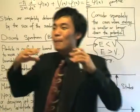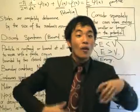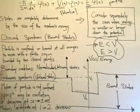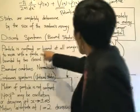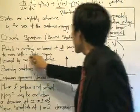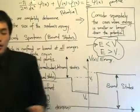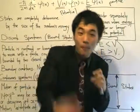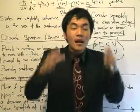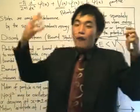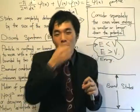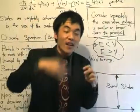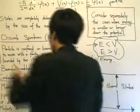A discrete energy spectrum means the particle is only allowed certain values. When the energy of the particle is less than the potential, we will have a discrete energy spectrum. The properties of a bound state: first, the particle is confined or bound at all energies to move within a finite region. As a classical analogy, imagine a comet moving toward Earth's orbit — it gets trapped inside Earth's atmosphere and moves around the Earth. That motion is confined at different energy values.